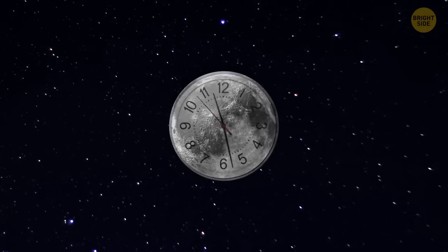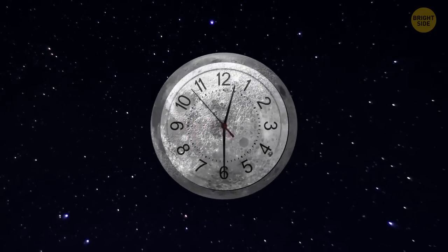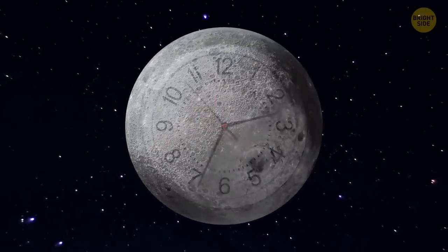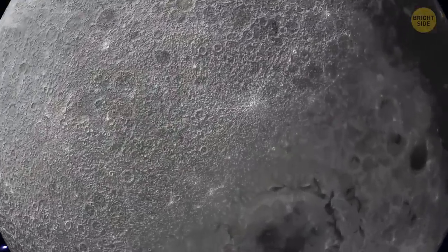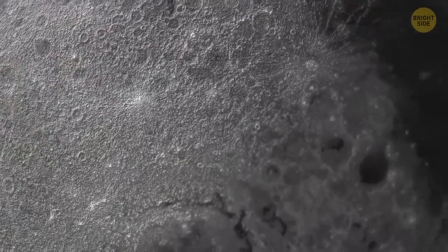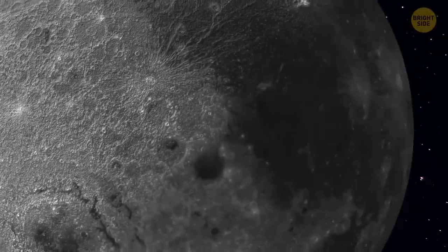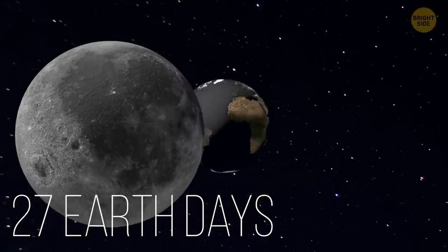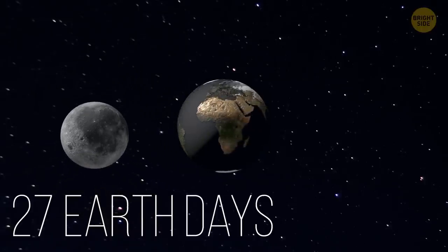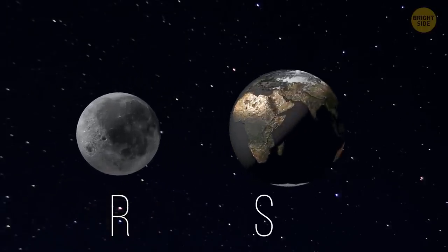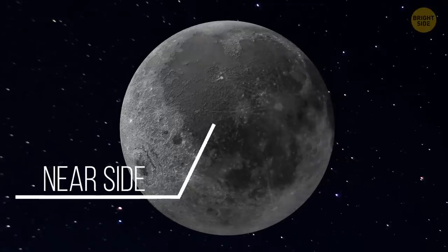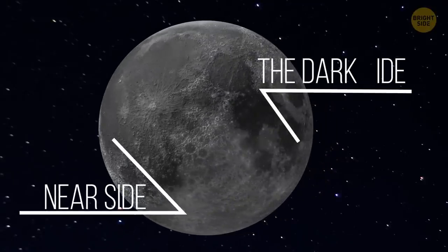If you observe the Moon for some time, you may notice that it's the same face staring at you every night. The truth is that the Moon does rotate, but very slowly. It takes our planet's natural satellite 27 Earth days to rotate around its axis. Plus, the Moon rotates at the same rate that it orbits Earth. The side we always see is called the near side of the Moon. And the side that's not facing us is, you guessed it, the far side of the Moon. It also has the nickname the dark side of the Moon.